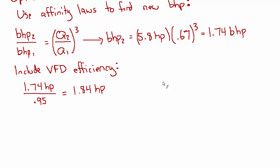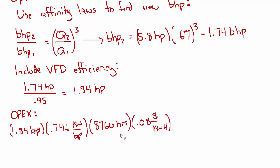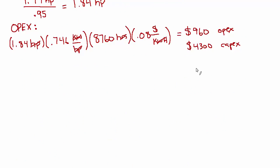So let's figure out what the operational cost of that will be for a year. We have the 1.84 horsepower times 0.746 kilowatts per horsepower times 8760 hours in a year. So now we're in kilowatt hours and then 8 cents per kilowatt hour. So kilowatt hour gets rid of all these and we're just left with dollars. So that's 960 OPEX. And then the capex we said was $4,300. So I'll just put that there so we have it all together. And that is the financial analysis for option one for the VFD.